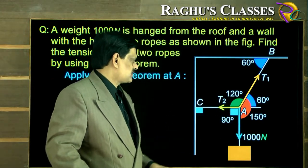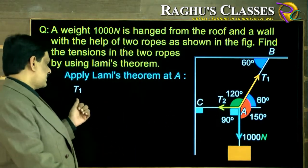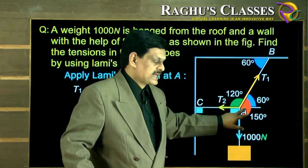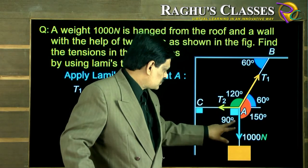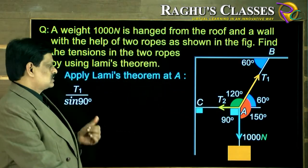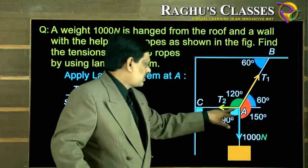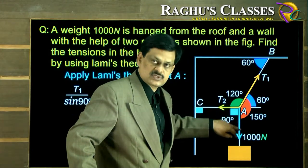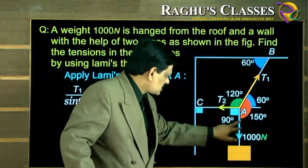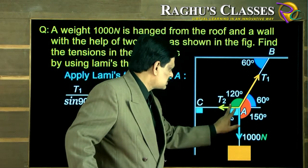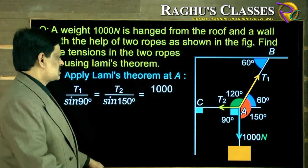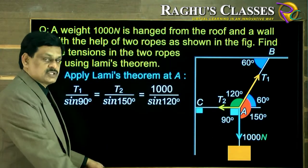So let T1 be the first force. Then T1 divided by the sine of the angle between the other two forces — that is sine 90 — is equal to T2 divided by sine of 150, which is equal to the third force 1000 divided by sine of 120.